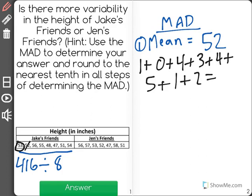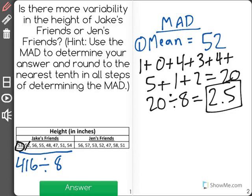When I add all of those together, I'll get a total of 5, 8, 12, 17, 18, 20. And then I'll divide 20 by all 8 data points to find that the mean absolute deviation of Jake's friends is 2.5.